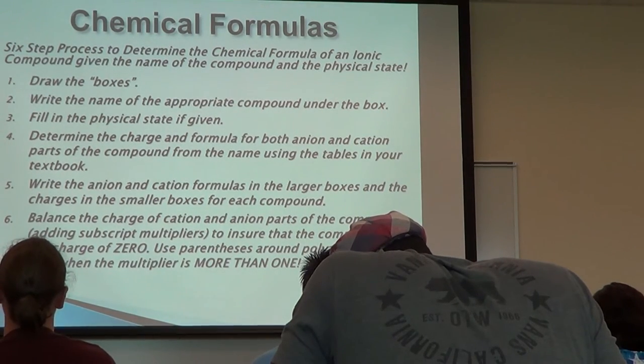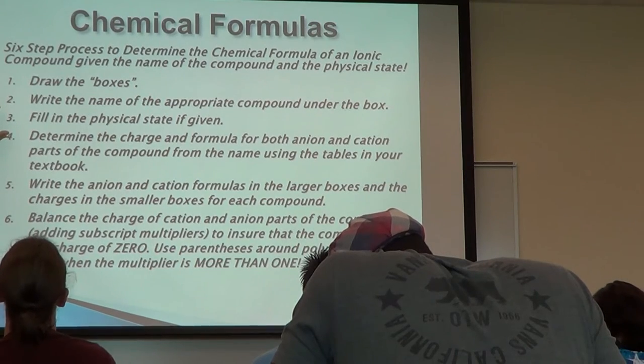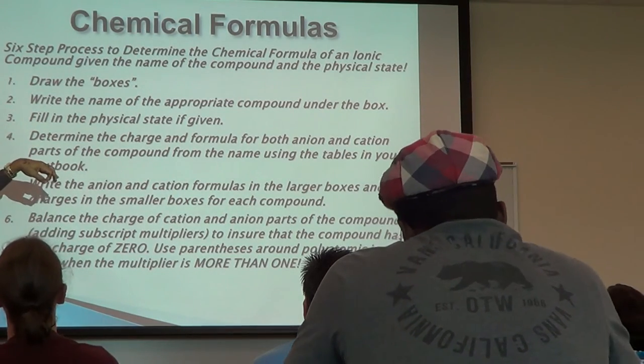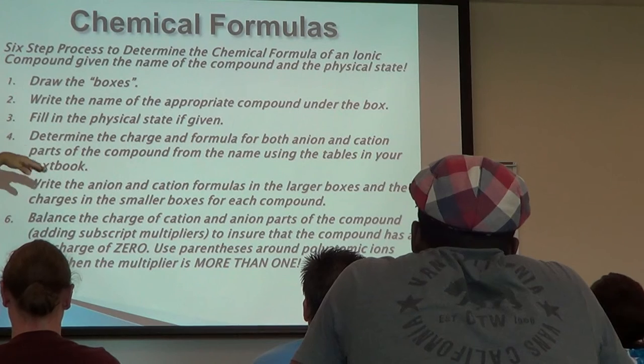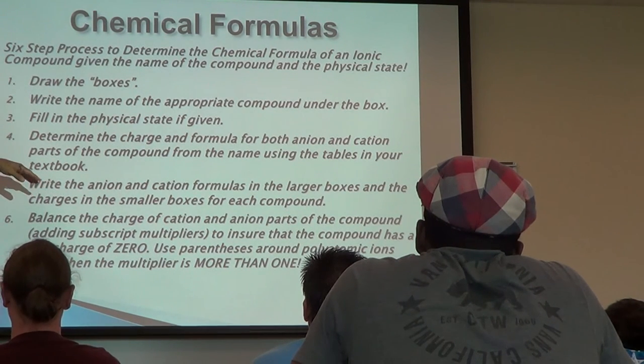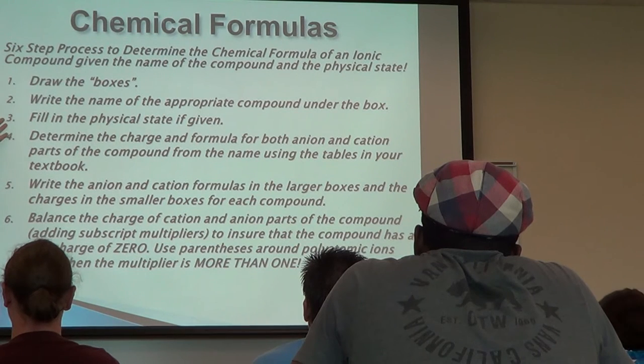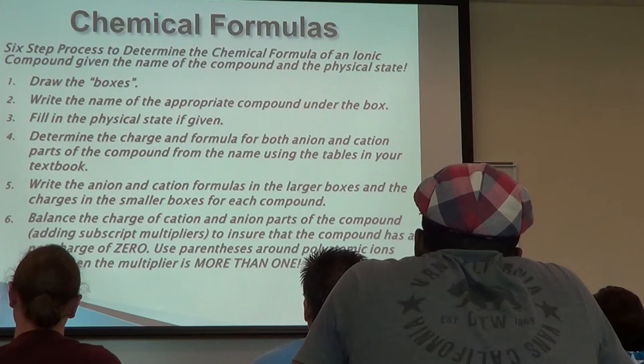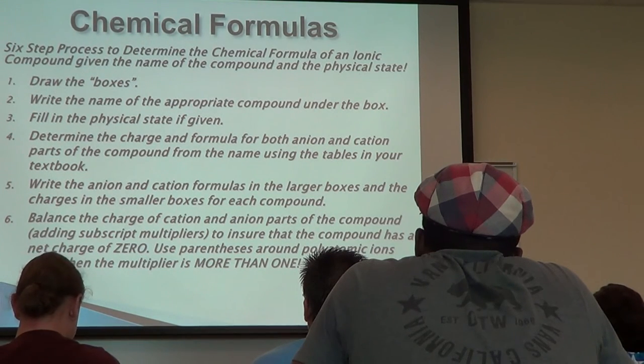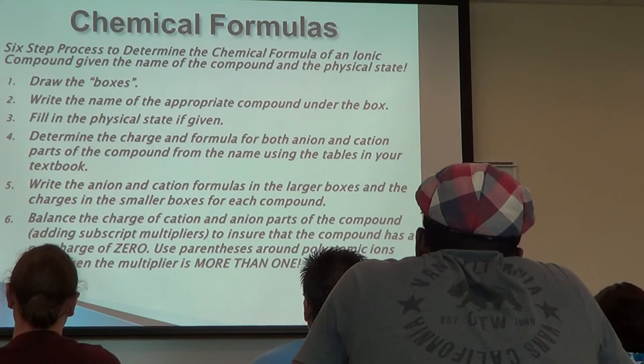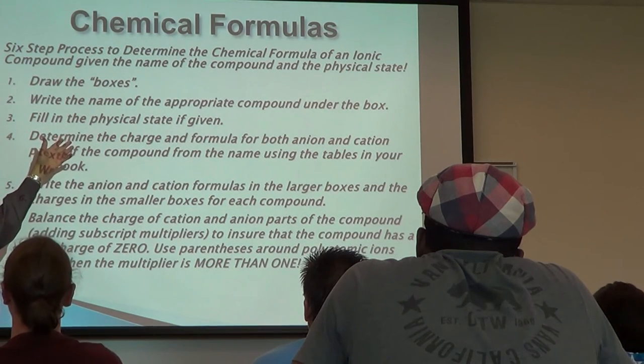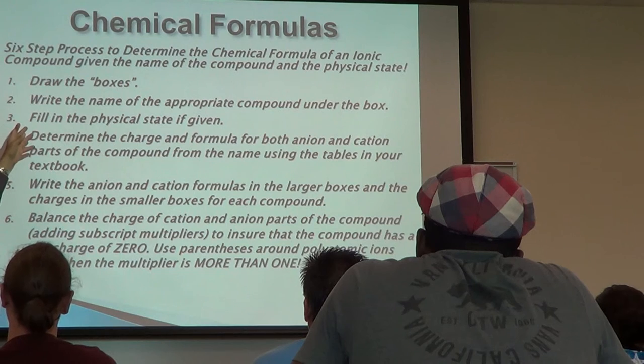First, draw the boxes. We're only dealing with one compound at a time here. Then step two, write the name of the compound under the box. So the name is in the question, you just write it under the box. The challenge is for you to actually write the same thing that's in the question under the box. You think, not very challenging. Until it's on a test, and then all of a sudden, A's become I's. It's amazing. Step three, fill in the physical state if it's given in the question. If it's not, leave it blank.